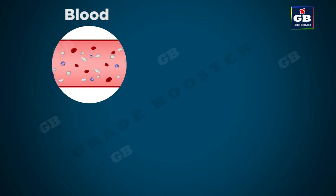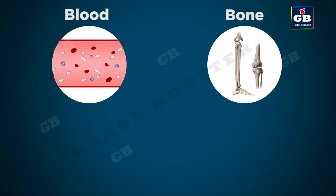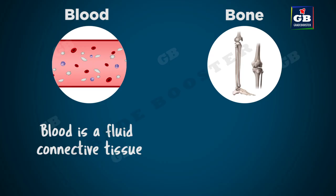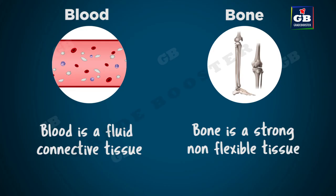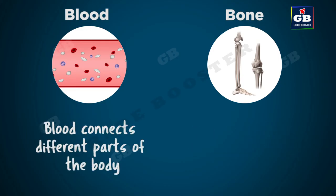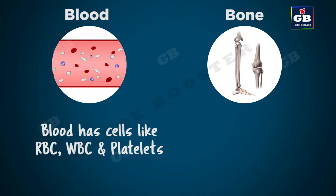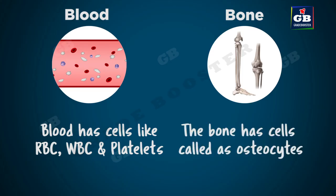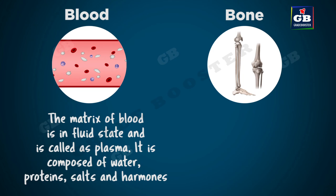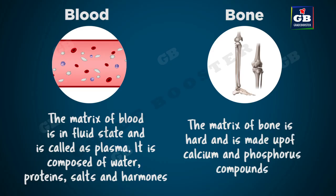Now let us see some differences between blood and bone. Blood is a fluid connective tissue whereas bone is a strong non-flexible tissue. Blood connects different parts of the body whereas bone gives shape and support to the body. Blood has cells like RBC, WBC, and platelets, while bone has cells called osteocytes. The matrix of blood is in fluid state called plasma, composed of water, proteins, salts, and hormones. The matrix of bone is hard and made up of calcium and phosphorus compounds.